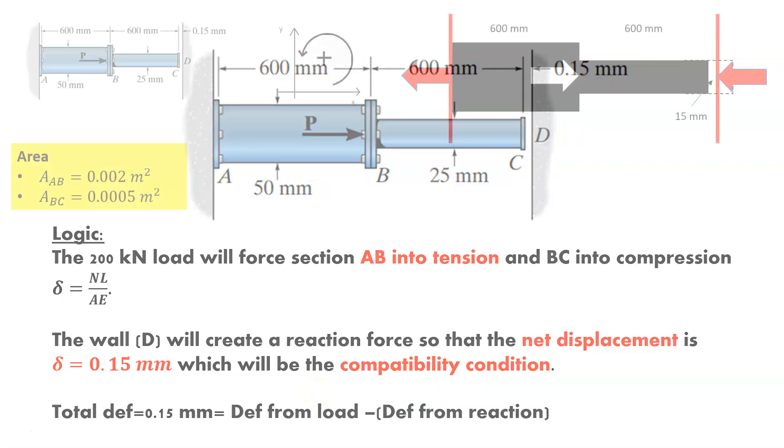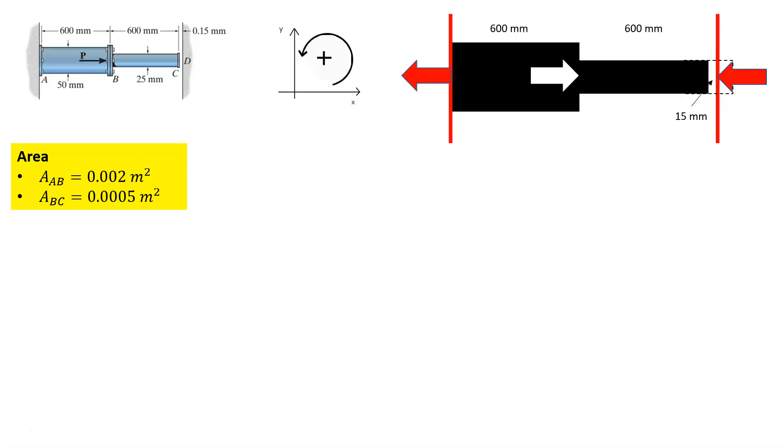All right. So let's go back to our problem. So again, we calculated our areas. We also know what the static equilibrium is going to be based on our reaction loads and our applied loads. It's going to be 200 kilonewtons. We also know that our compatibility is 0.15 millimeters, and it's the displacement of AB minus the reaction due to D, the displacement that's going to be imposed on both segments. So superposition. That is to utilize that term superposition.